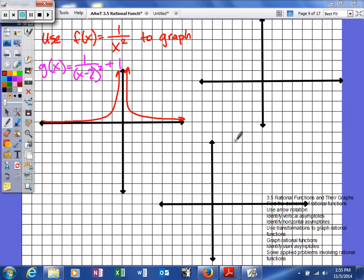All right, so here's our next little thing we're going to learn in 3.5 rational functions. This time we're going to use the function f(x) = 1 over x squared to graph g(x) = 1 over (x minus 2) squared plus 1.